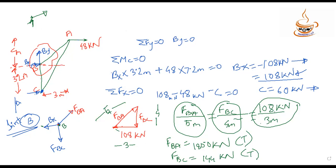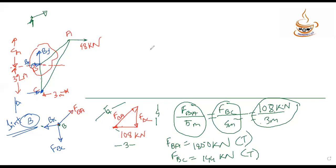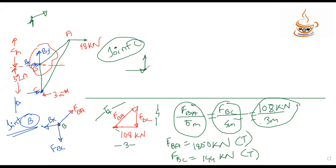We have to do joint C and joint B, then joint A. Working through joint C repeatedly to find the member forces. Then we solve A-C and B-C. Let's do A-C. This is the solution for joint C.